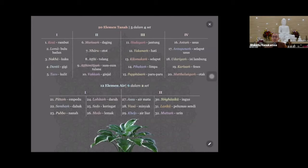12 ini lebih cair sifatnya, merupakan cairan tubuh, unsur airnya lebih dominan. Jadi kita tahu sekarang kadang 31 - kenapa 31? Karena tidak masuk otak. Kenapa 32? Karena kebanyakan otak dipisahkan dari sumsum tulang.